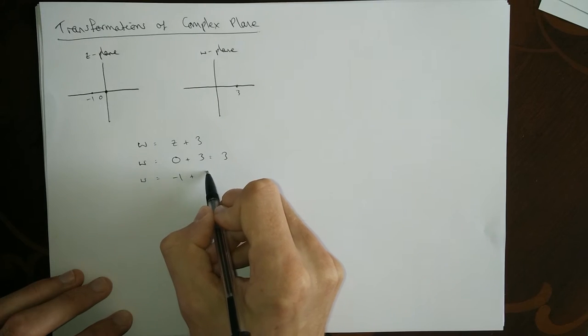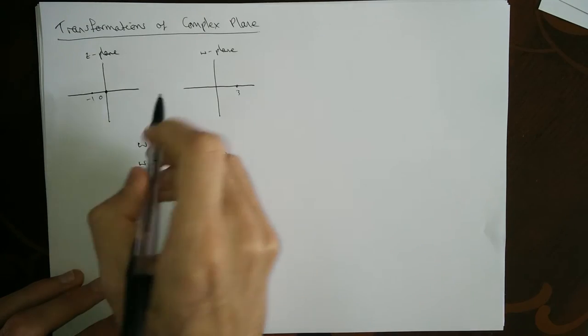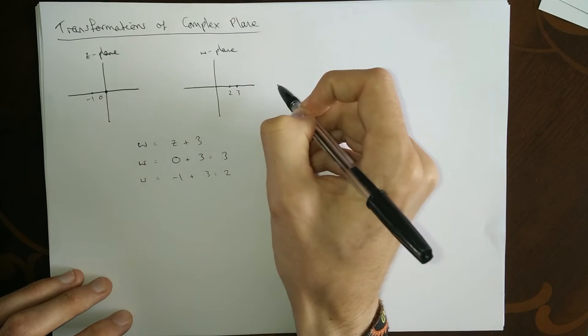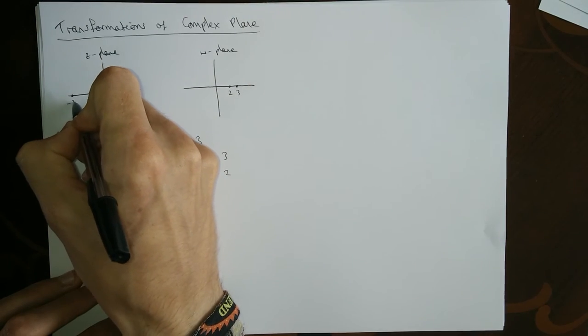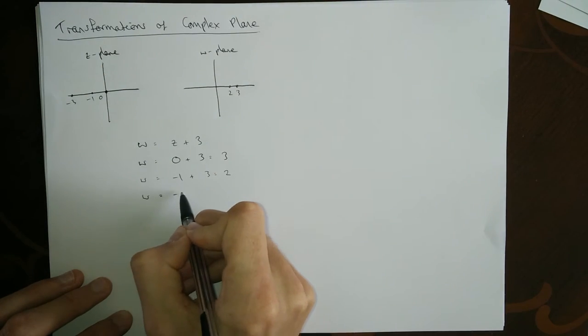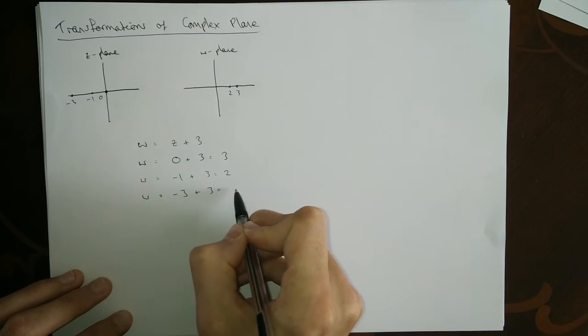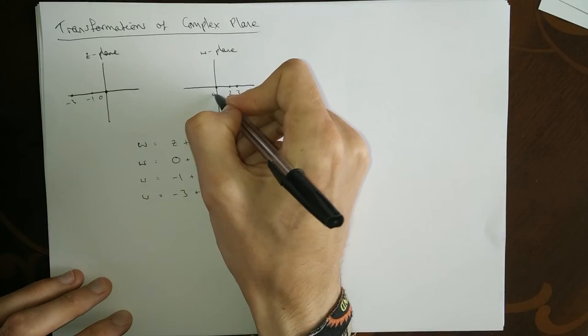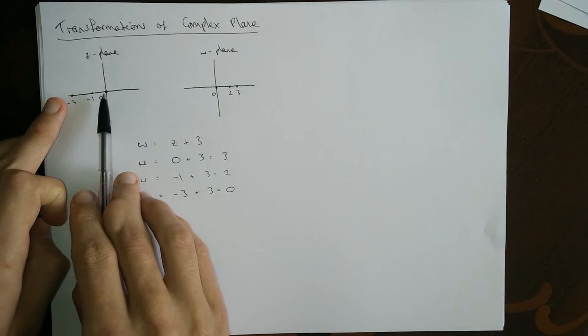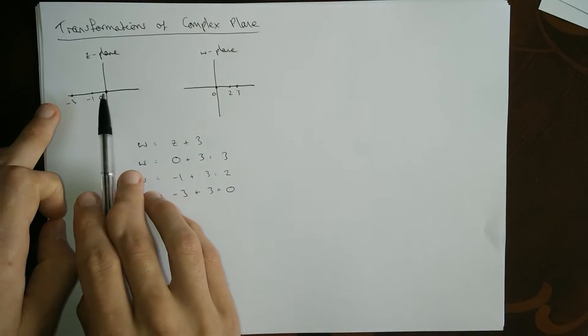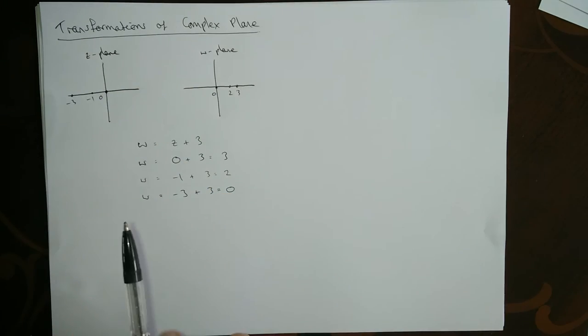Then trying minus three: w equals minus three plus three is going to be zero. It's taking minus three and moved it across. You can see what's going on - it's taking all these points just sliding them across, mapping them by sliding them to one side by three. At the minute we've really just done some very basic math, something you might show like a year seven with functions.